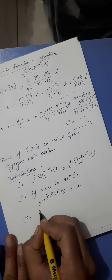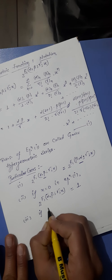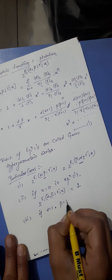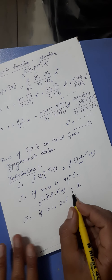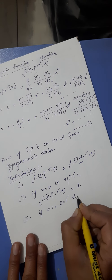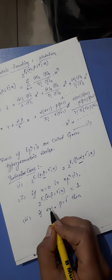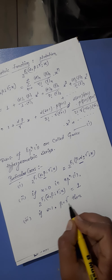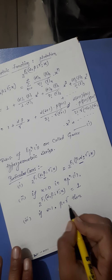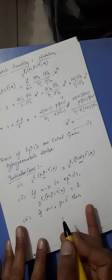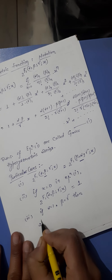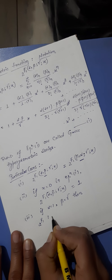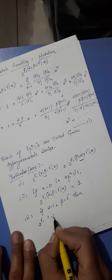If α = 1 and β = γ, put 1 in place of α and γ in place of β in equation first, then 2F1(1, γ; γ; x) reduces accordingly.